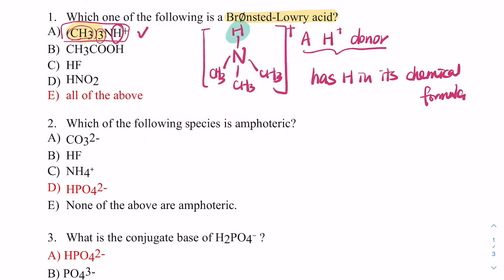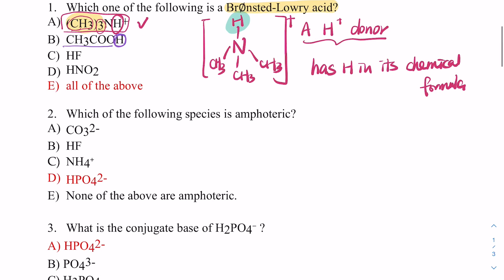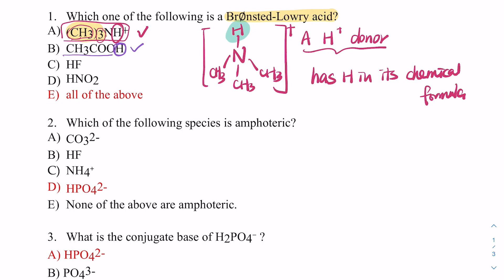Choice B is an acid — that H can be donated, and as you go on in organic chemistry you'll recognize this as a carboxylic acid. Choice C is hydrofluoric acid — that H can definitely be donated. Choice D we're also familiar with, and that H could be donated as well. So for this question, all of them are Brønsted-Lowry acids. The key is knowing the definition and applying it to each option.